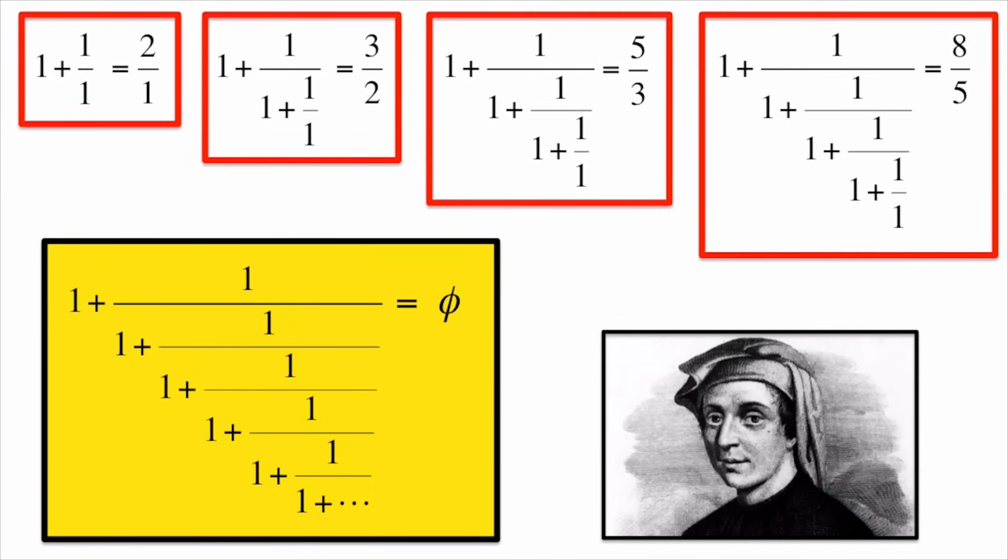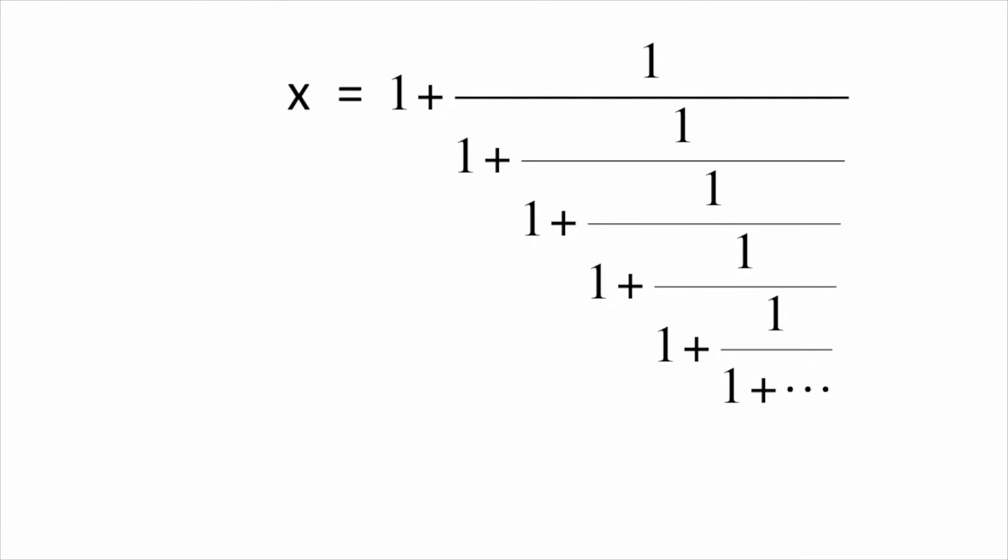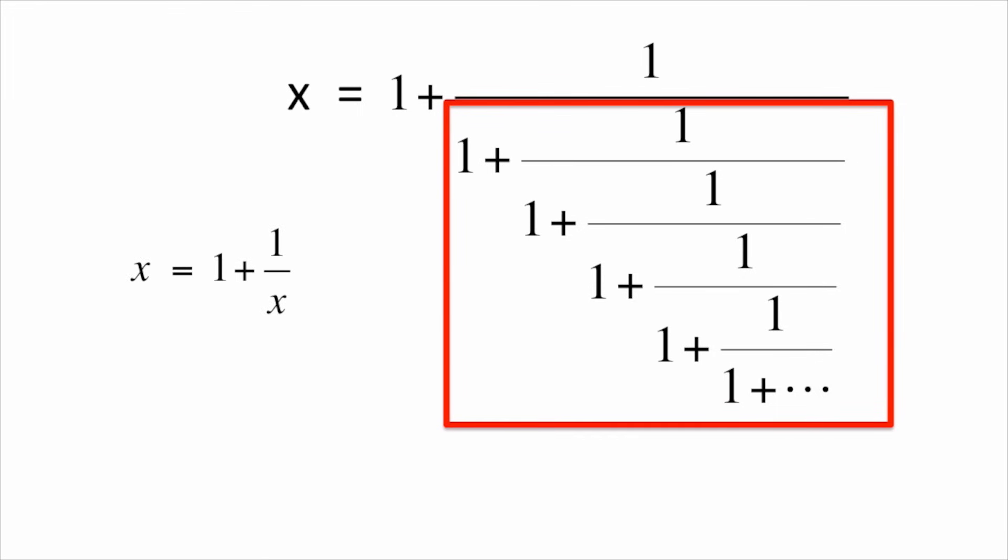A way to see this without Fibonacci numbers is to label the continued fraction as x. Notice that the continued fraction in the red box is also x, leaving us with this simple expression. We can now solve this equation and show that x equals Phi.